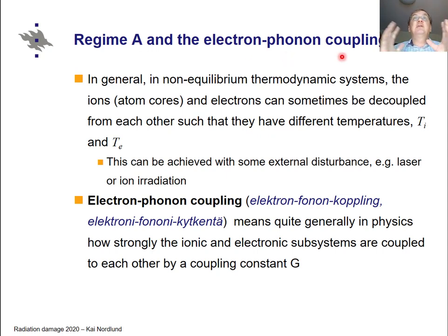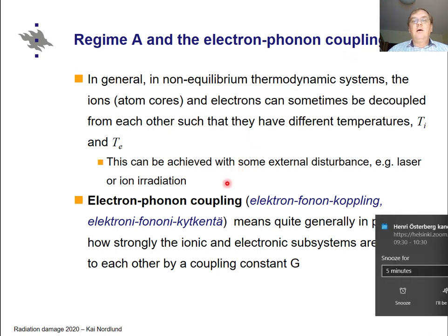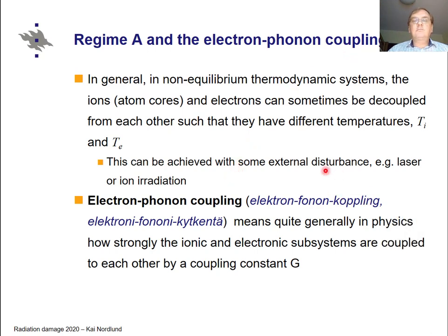Electron-phonon coupling theory is a general part of solid-state physics, not specific to radiation damage. It describes an atomic and an electronic system with two different temperatures: the ionic temperature for the atoms and the electronic temperature for the electrons. This can be relevant beyond radiation physics — laser irradiation well below any ionization threshold can also create this situation; it is also a common concept in low-temperature physics and plasma physics, where one almost always works with separate ion and electron temperatures.